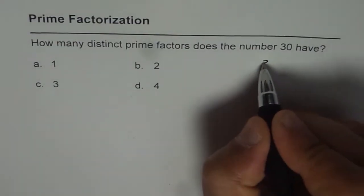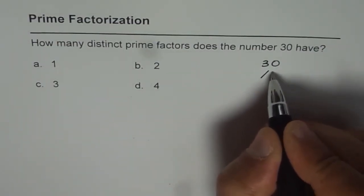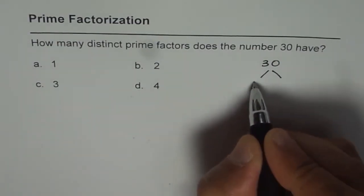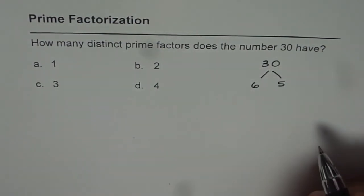So let's start with 30. 30 could be written as 6 times 5. 6 times 5 is 30.